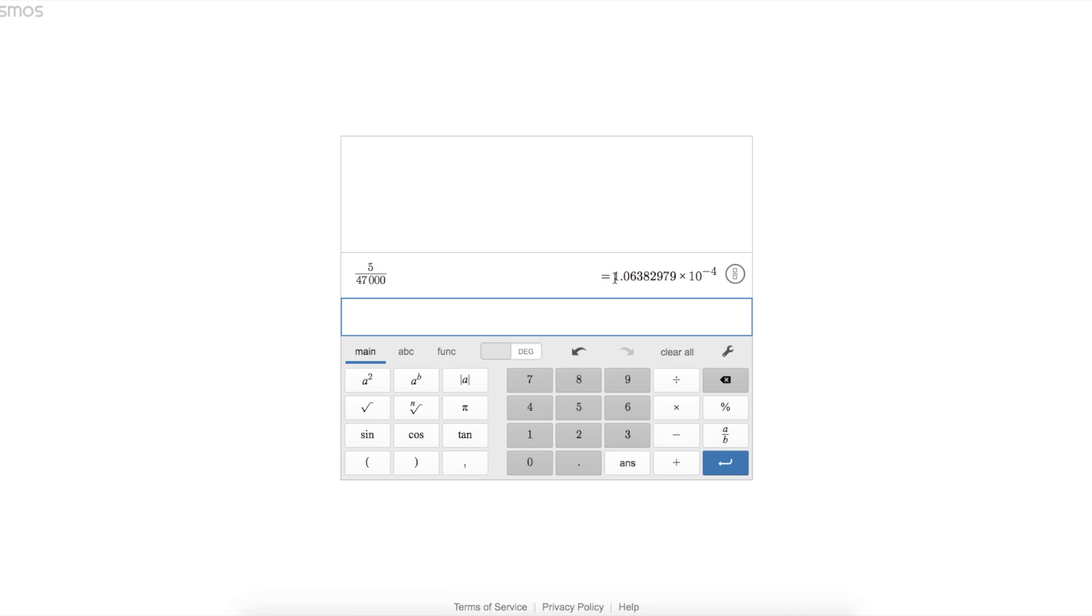And that would be 0.1 milliamps when the switch is pressed and we have 5 volts across the 47k resistor. And current squared times resistance, the power dissipation in that resistor, 0.5 milliwatts.